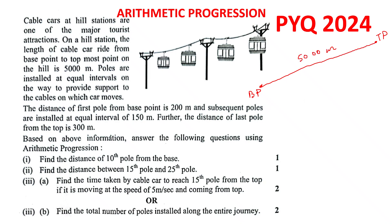Poles are installed at equal intervals along the way to provide support for the cables on which the car moves. The distance of the first pole from the base point is 200 meters. So this is the base point, and here is the first pole P1, and this distance is 200 meters.